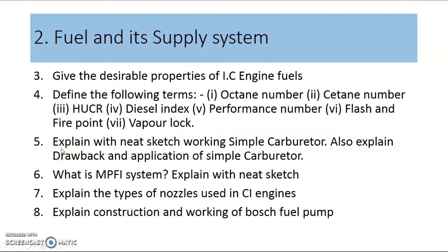The question asked in the GTU examination for seven marks is: explain with a neat sketch the working of a simple carburetor and also explain the drawbacks and applications of a simple carburetor. Second, for the petrol engine, sometimes we use the multipoint fuel injection system, which is also an important question from the fuel supply system. For the CI engine, the different types of nozzles is an important question, and the last is: explain the construction and working of a Bosch fuel injection pump. These are the important questions from unit number two.